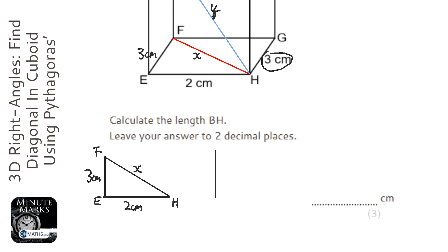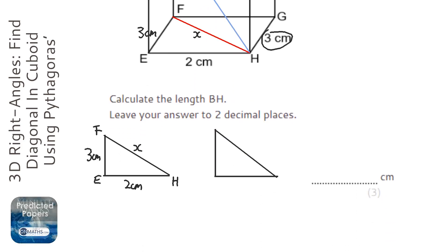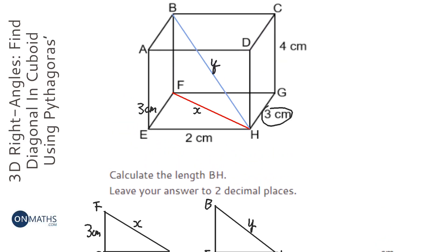The next triangle we need is BFH. We called this one y, this one is x, and the next one is the height there which is 4 centimeters.